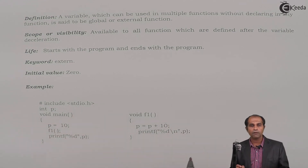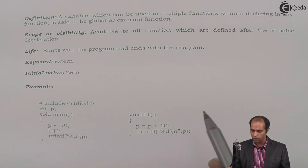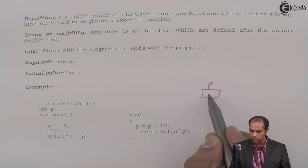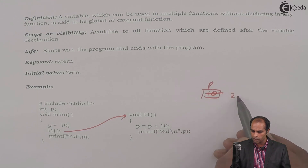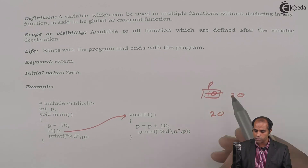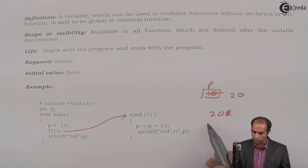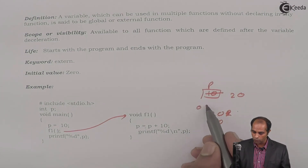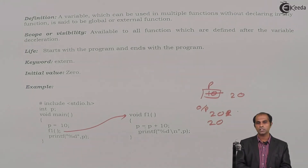Let's look at an example output. P is declared as a global variable and set to 10. When f1 is called, p becomes p plus 10, so 10 plus 10 equals 20, and the function prints 20. When the function ends, p is not destroyed because it's global. Back in main, p is still 20, so the output will be 20 and 20. That's the concept of global or external variables.